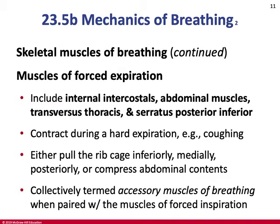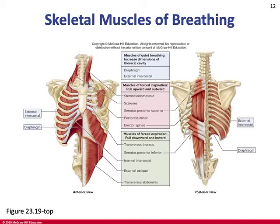In forced expiration, we use the abdominal muscles — internal and external obliques, transverse and rectus abdominis — and also the internal intercostals. These pull the rib cage down and compress it, while the abdominal muscles push internal organs up against the diaphragm, letting you blow more air out.